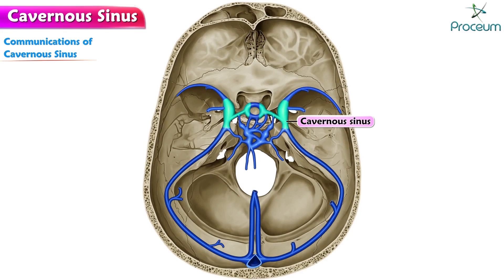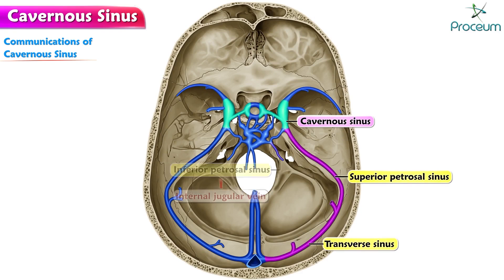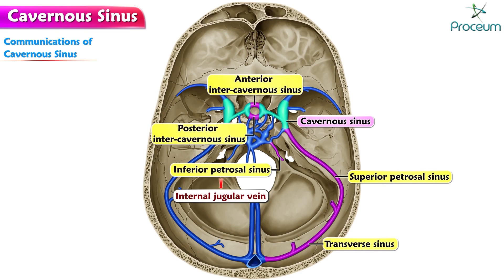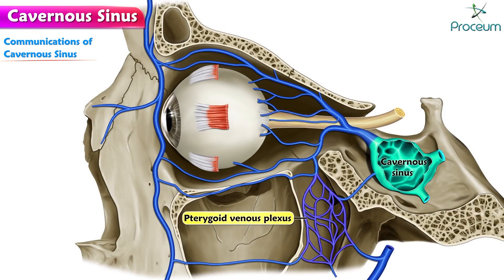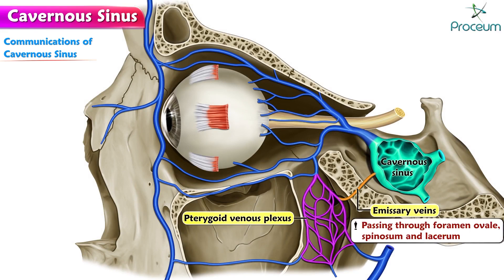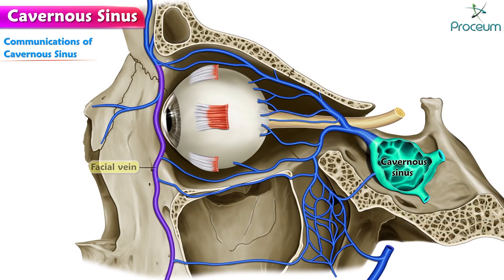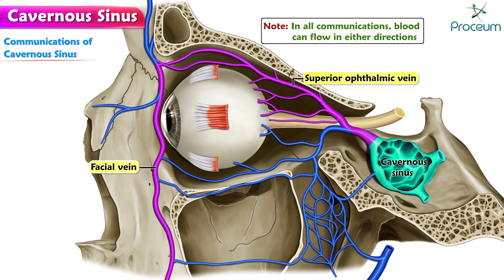Now we'll go over the communications of the cavernous sinus. The transverse sinus via the superior petrosal sinus; the internal jugular vein, or IJV, via the inferior petrosal sinus; and the opposite cavernous sinus via the anterior and posterior intercavernous sinus. The pterygoid venous plexus via emissary veins passing through the foramen ovale, spinosum, and lacerum. The facial vein via the superior ophthalmic vein. Note that in all communications, blood can flow in either direction.